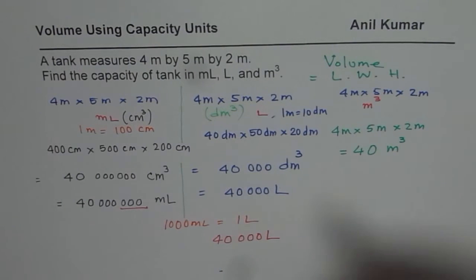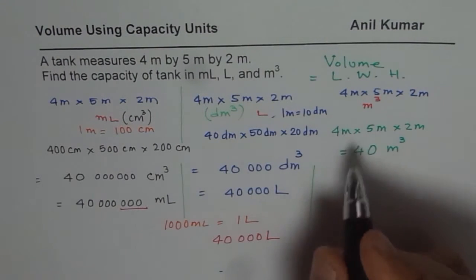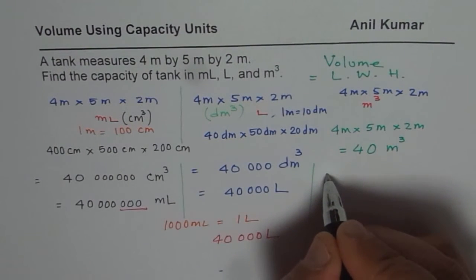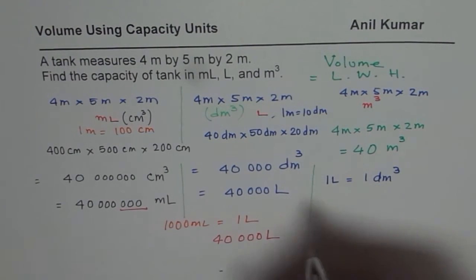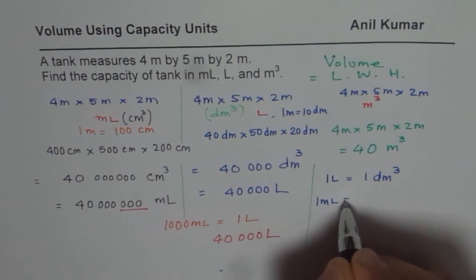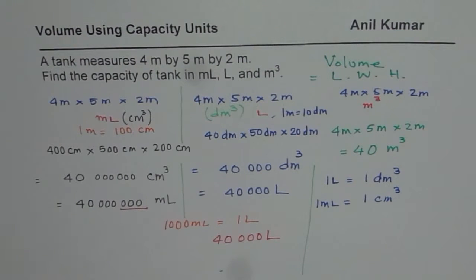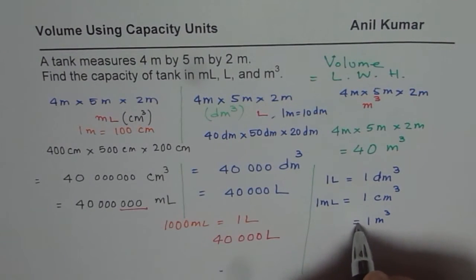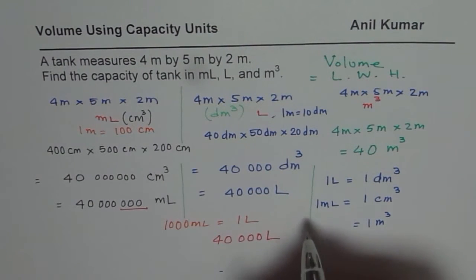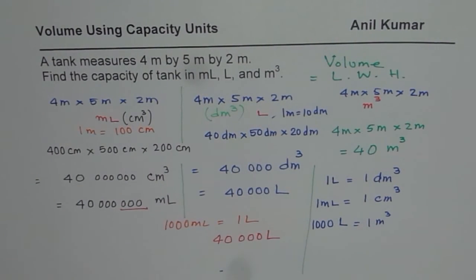That helps us to understand all the units which we have gone through in these set of videos. So remember, 1 liter is actually equals to 1 decimetre cube. And 1 milliliter is equals to 1 centimeter cube. But when we are talking about 1 meter cube, then what is that related with liters? It is 1,000 liters. So 1,000 liters is 1 meter cube. These are the units which you should understand by now.